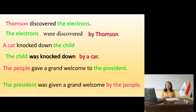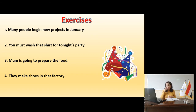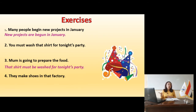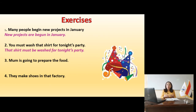Slide 14 — exercise example number 3: 'My mom is going to prepare the food.' The food is the object. Don't be confused by the 'ing' — this is future using 'going to,' not present continuous. So verb to be here is 'is going to be,' followed by the past participle: prepared. Result: 'The food is going to be prepared by mom.'